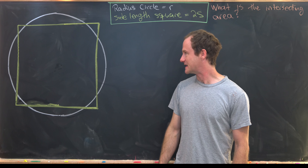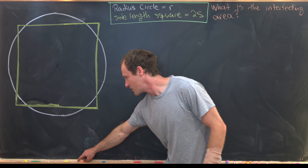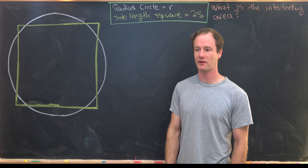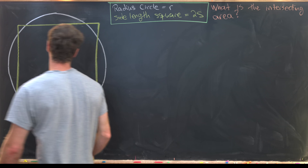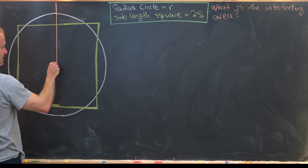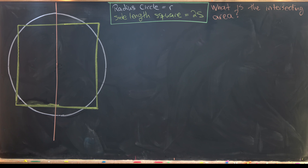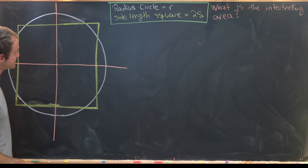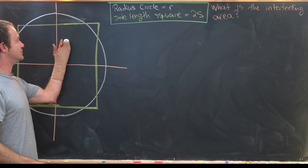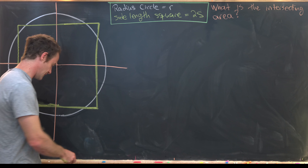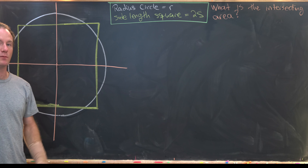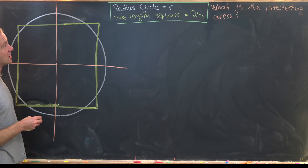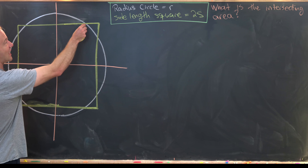Let's place this on a coordinate plane and use symmetry to simplify things. We put the origin at the center, with the y-axis and x-axis as shown. All we need to do is find the intersecting area in the first quadrant and then multiply by 4.